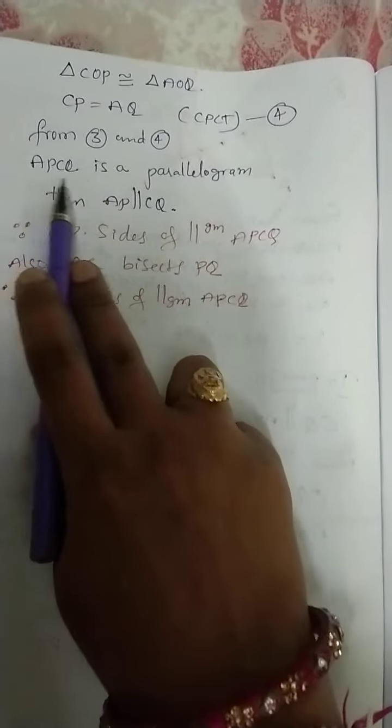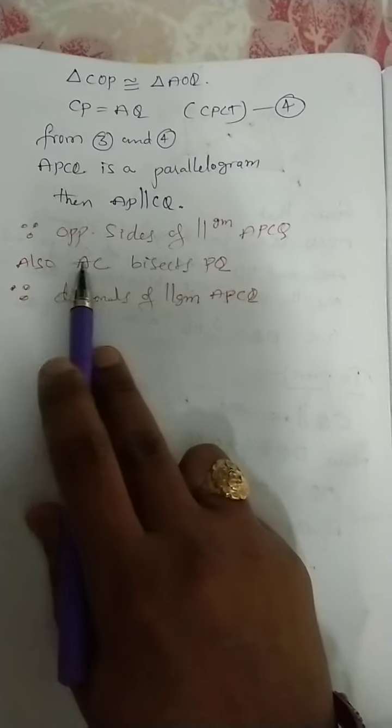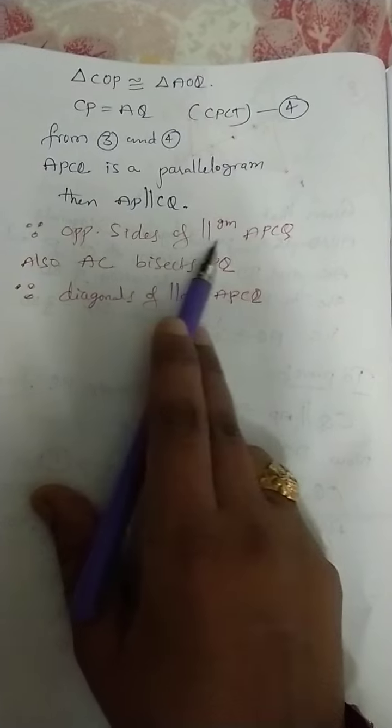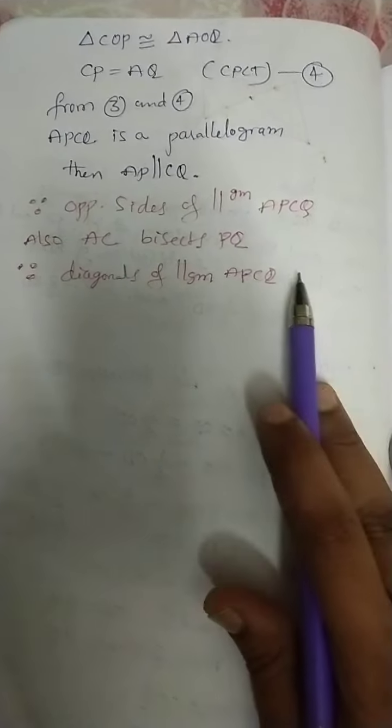From equations 3 and 4, opposite sides are equal. Therefore APCQ is a parallelogram. CQ is parallel to AP and also AC bisects PQ as diagonals of parallelogram.